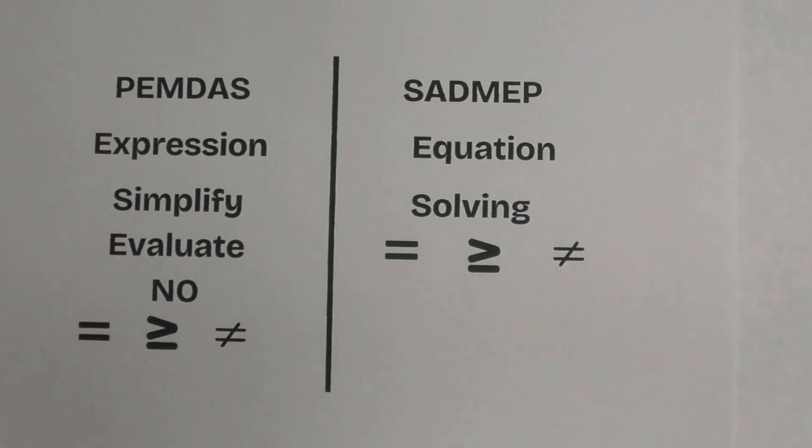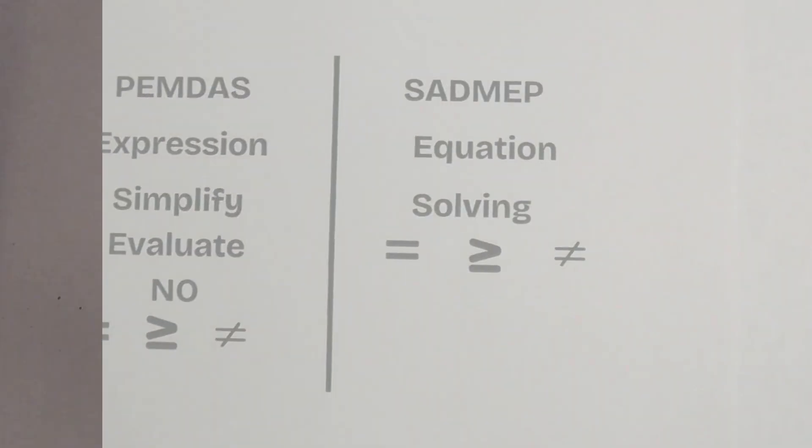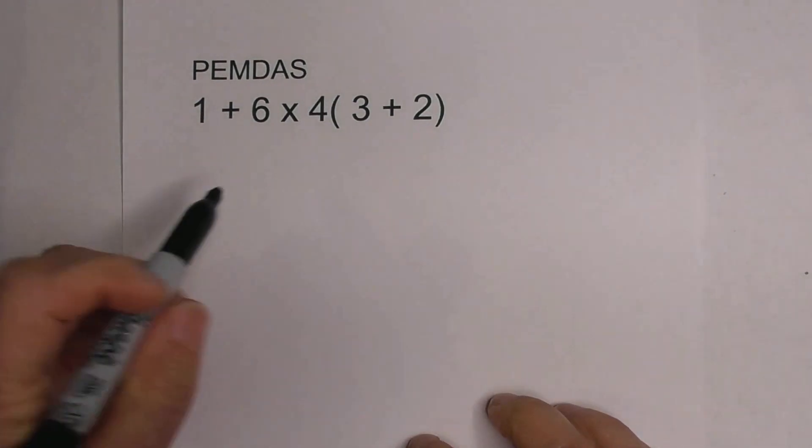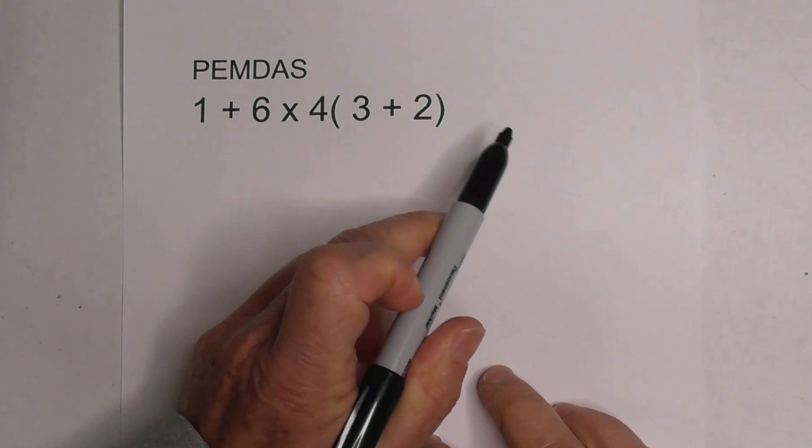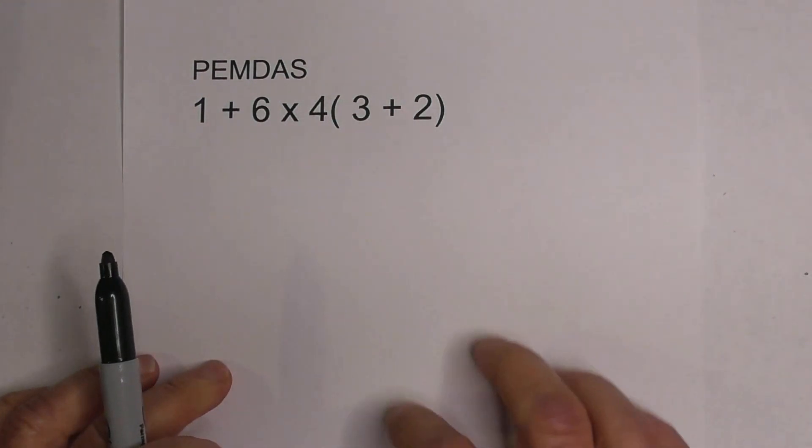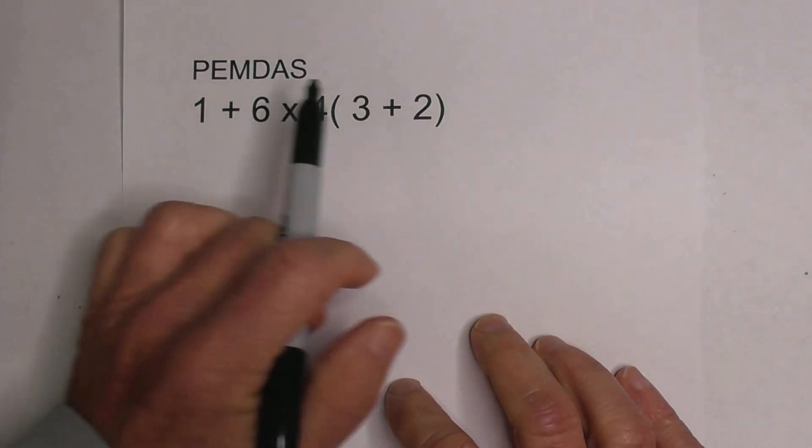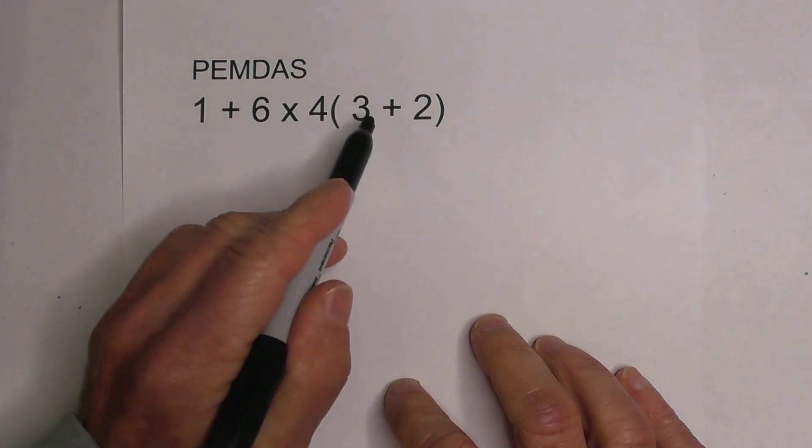So let's take a look at two examples. Okay, let's look at this first example. It's an expression and notice there's not an equal sign, an inequality sign, or a not equal to sign.